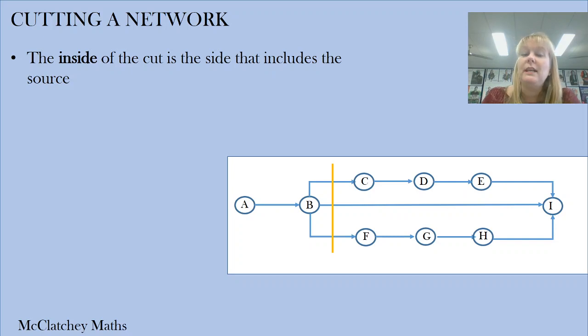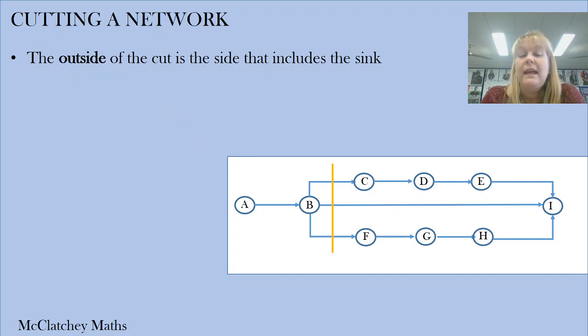We've also got some new terminology. The inside of the cut is the side that includes our source. Here's our source at A, and that side of the orange line, the left-hand side, is called the inside of the cut. The outside of the cut is the opposite side, the side that includes the sink. Our sink is at vertex I, and that's the right-hand side of this cut. It's not always going to be a left to right network - it could be top and bottom, for example. You just need to look at which side the source is on - that's the inside of your cut.